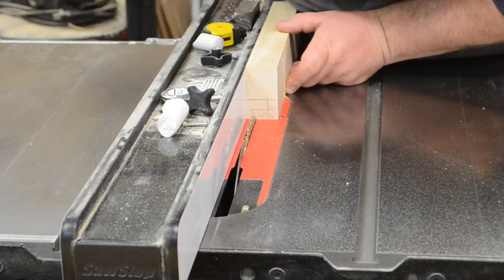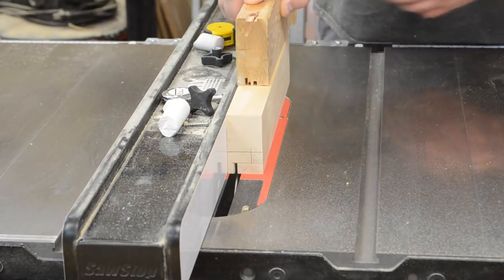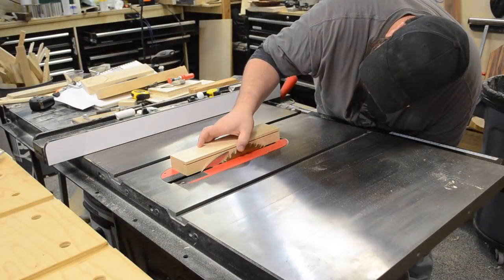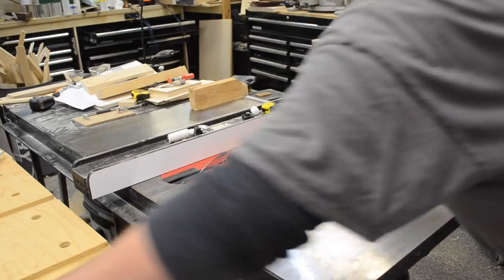I adjusted my table saw blade height, moved my rip fence over, and made my first cut as part of the rabbet. Re-adjusting the table saw blade height to match up with that first initial cut, slid my fence over, and I could make that cut.